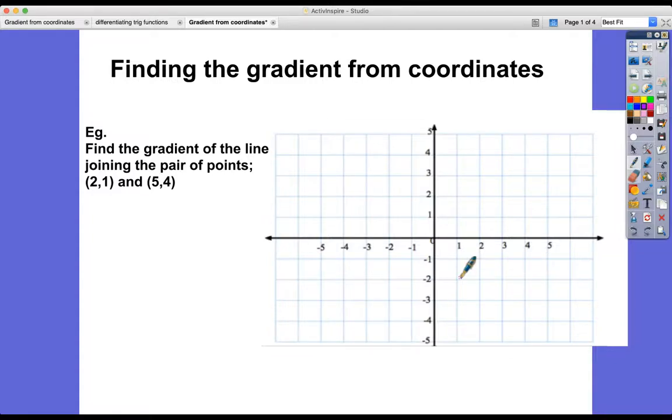Hi, and welcome to a lesson on finding the gradient from coordinates. Today I'm going to show you how to find the value of the gradient, that is the steepness of a line, from just knowing two points on it. So in this first case, find the gradient of the line joining the pair of points (2,1) and (5,4).